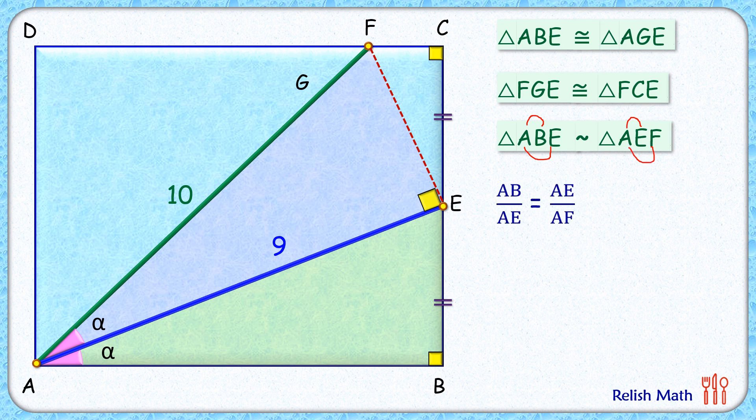Putting the values here, AB is what we have to find, AE is 9 centimeter, and AF is 10 centimeter. So putting these values and cross multiplying, we'll get AB as 8.1 centimeter. That's the length of the rectangle.